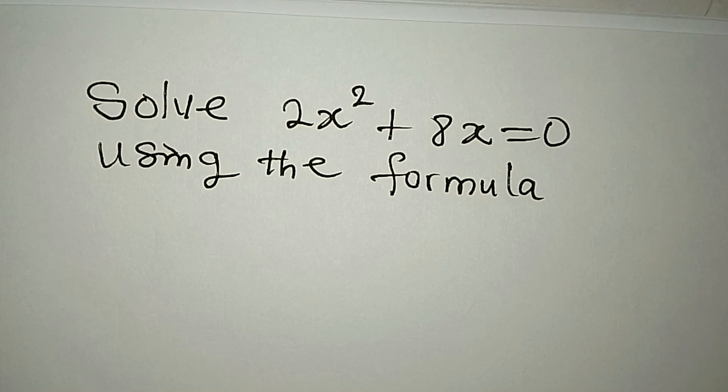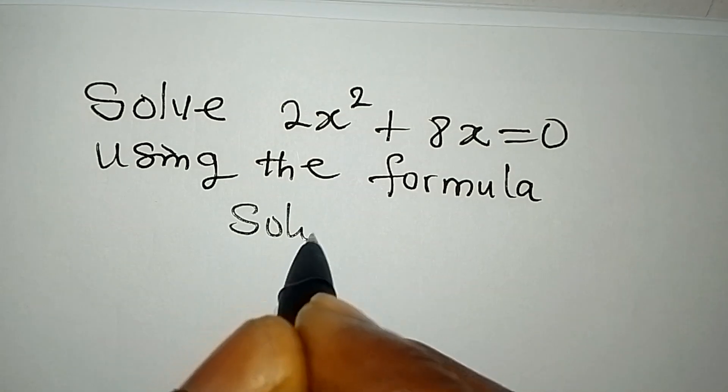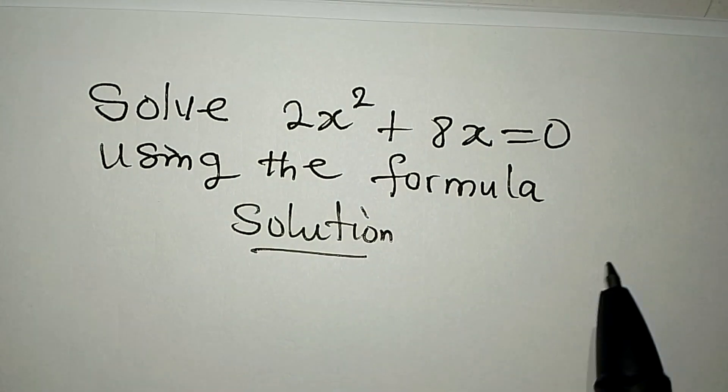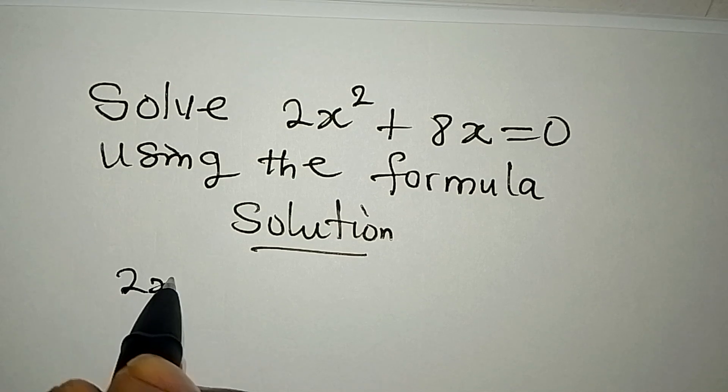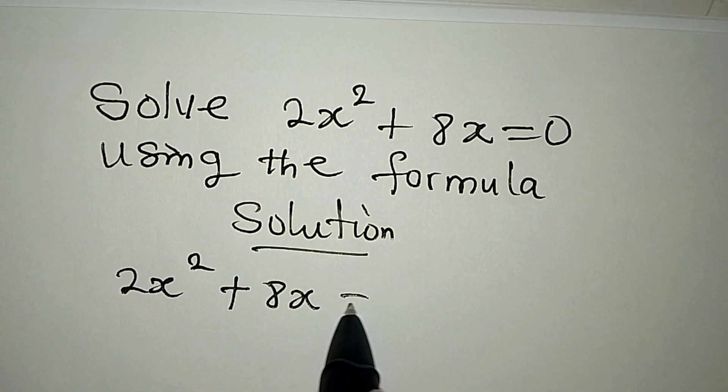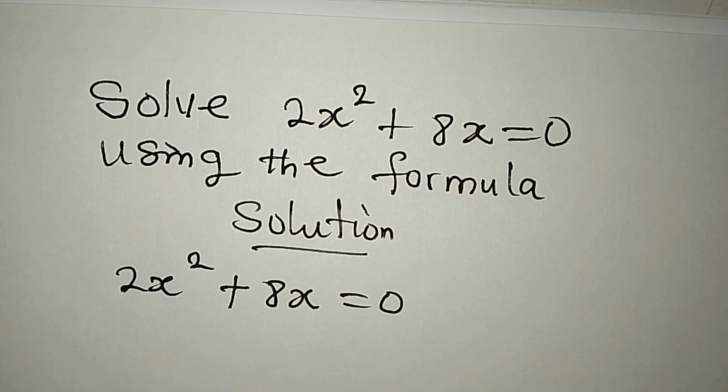Hello everyone, let's provide the solution to this problem. We are instructed to solve this using the formula method. So we have 2x² + 8x = 0. Now if we are to use the formula method, it means that we should first identify this problem.